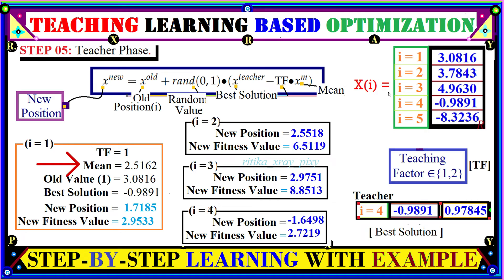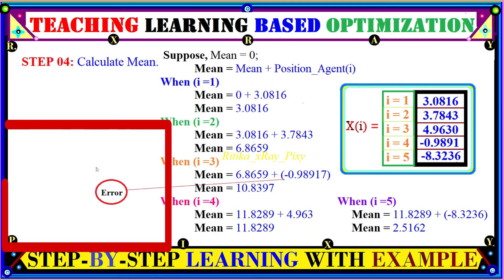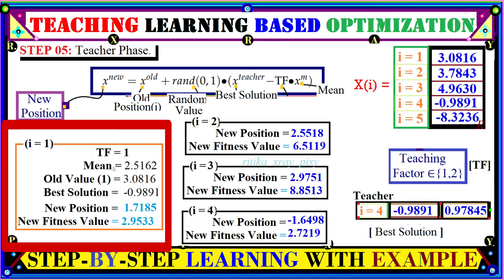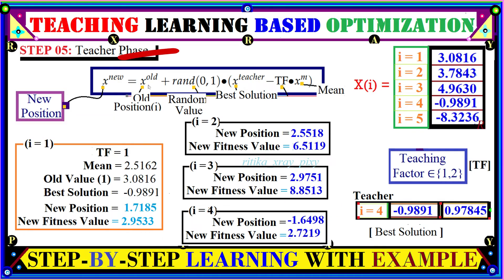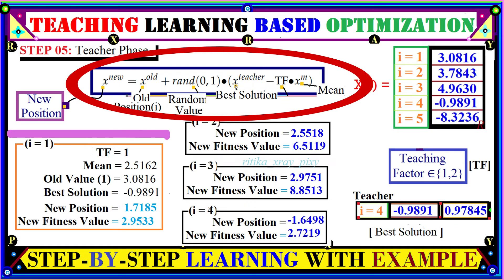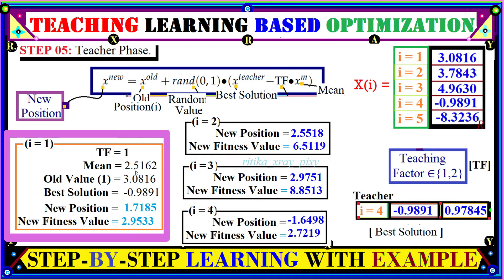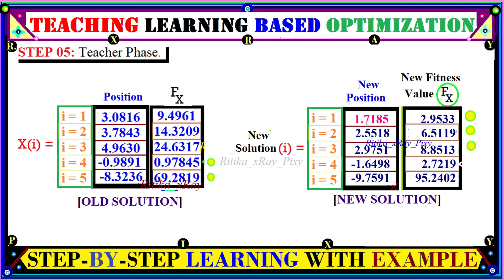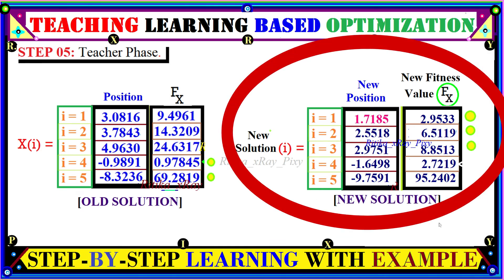For the first individual, we generate the new position. The teaching factor is randomly selected as 1 here, and using the mean value, the older position of the first learner, and the teacher's value, we compute: older position plus random value times (teacher value minus teaching factor times mean). Like that, we compute for all learners one by one and obtain the new solutions for all five individuals.